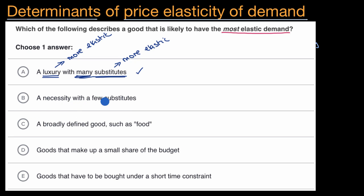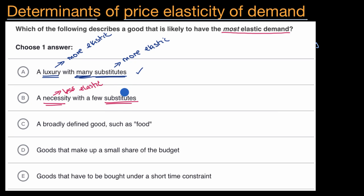A necessity with few substitutes — this is the opposite. If it's a necessity, this would be more inelastic, or less elastic. And with few substitutes, if there's a change in price, people say, well, I still have to buy that thing — I can't substitute it with other things. This would also be less elastic. Remember, we're looking for the most elastic demand, so we can rule this one out.